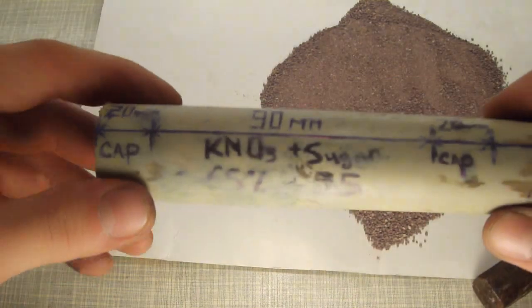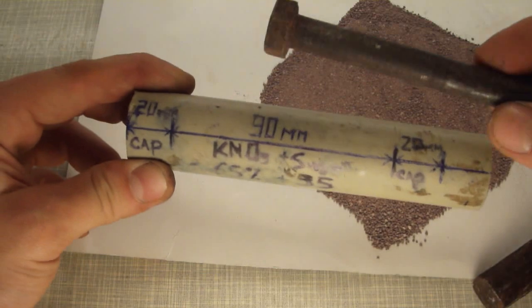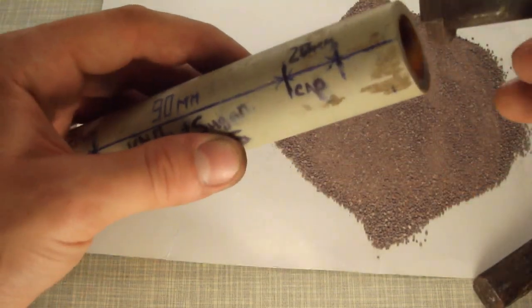Next, we do the same with the fuel mixture of potassium nitrate and sugar for 90mm, and at the end 20mm of bentonite. Again, gradually adding and tamping.